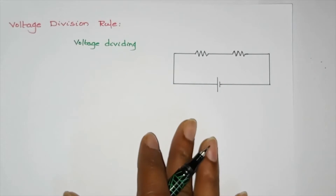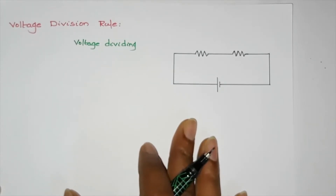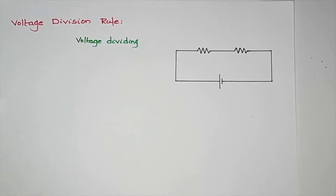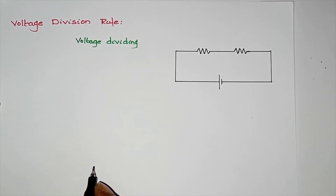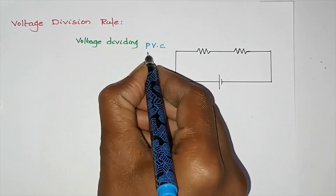We will discuss the voltage division rule. We have two circuits: a parallel circuit and a series circuit. In a parallel circuit, the voltage is constant.